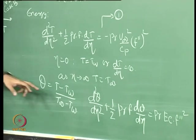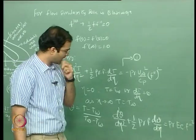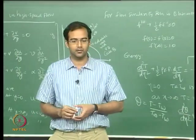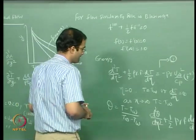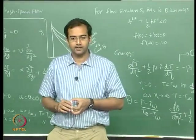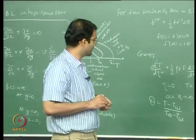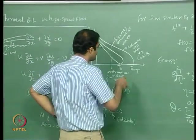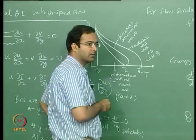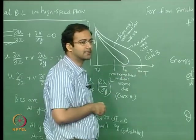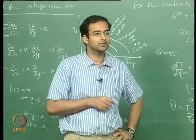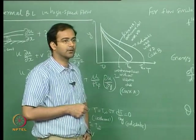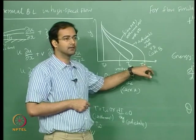This gives your non-dimensional form in terms of theta defined this way. You can solve this by shooting technique just like any other ODE. But we are not simply interested in getting the temperature profile or the slope of the temperature at the wall — we are also interested in knowing what happens if you put an adiabatic boundary condition at the wall and what the adiabatic temperature will be.